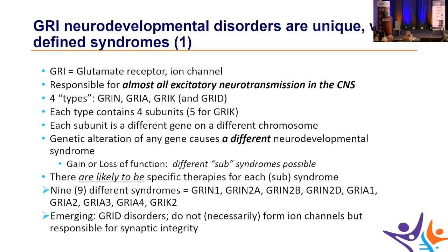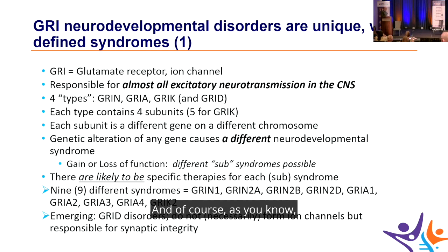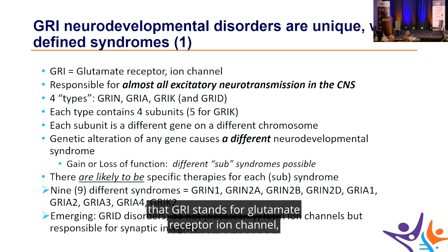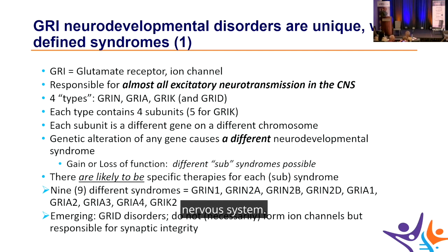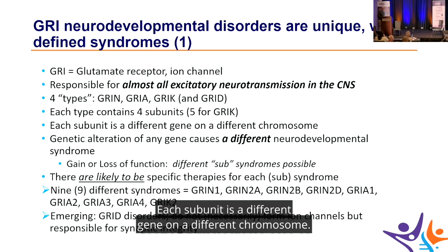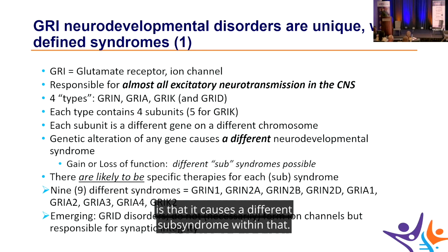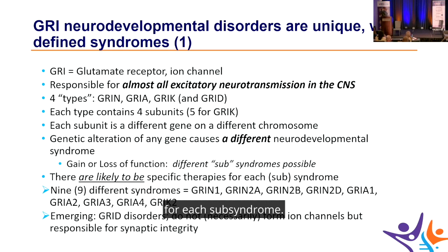I'm not telling you anything you don't know, but GREE neurodevelopmental disorders are all unique and well-defined syndromes. GREE stands for Glutamate Receptor Ion Channel, responsible for almost all excitatory neurotransmission in the nervous system. There are four types: GRINs, GRIAs, GRICKs, and GRIDs. Each type contains four or sometimes five subunits, with each subunit being a different gene on a different chromosome.